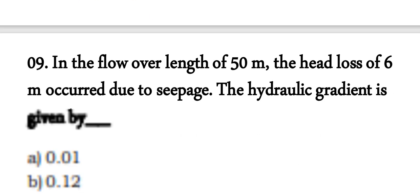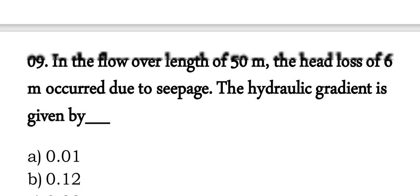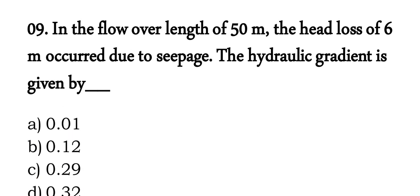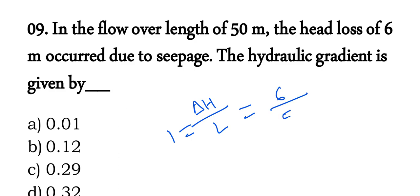Question 9: in a flow over a length of 50 meters, head loss is 6 meters. Hydraulic gradient i = head loss / flow length = 6 / 50 = 0.12.